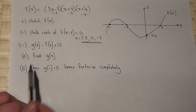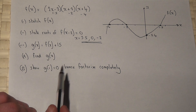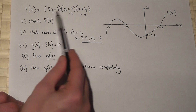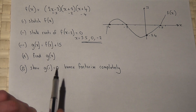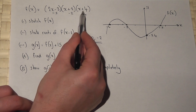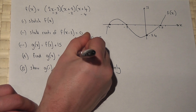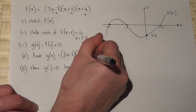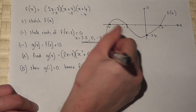In the next part we're given that g of x is f of x plus 15. We must expand the brackets and then add on 15. Expanding the first pair of brackets — x plus 4 and x plus 2 — and then multiplying by 2x minus 3, we get x squared plus 6x plus 8.